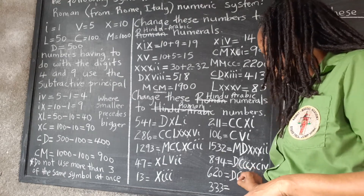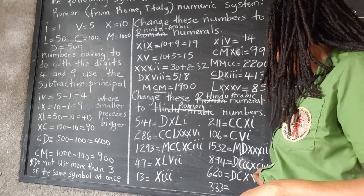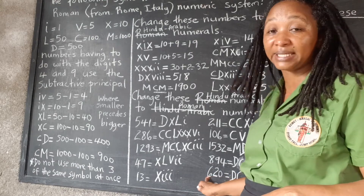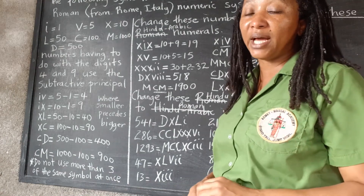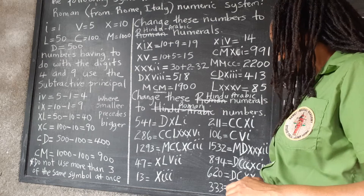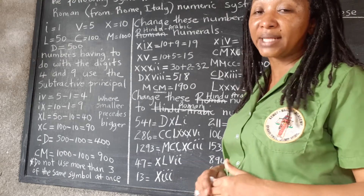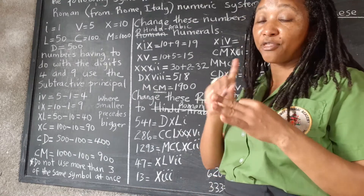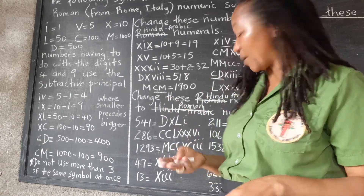For 620: we need 500 — D — and a 100 — C — which makes 600 — DC. The 20 would be two 10s — XX. So 620 is DCXX. For 333: we need three 100s — CCC — three 10s — XXX — and three 1s — III. No subtractive principle, no 4s anywhere. So 333 is CCCXXXIII.